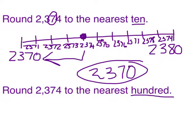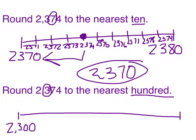Now let's round it to the nearest hundred. Again, I'm going to look at the hundreds place, and that tells me that my number falls between 2300 and 2400. I'm going to count by tens because I'm rounding to the nearest hundred.